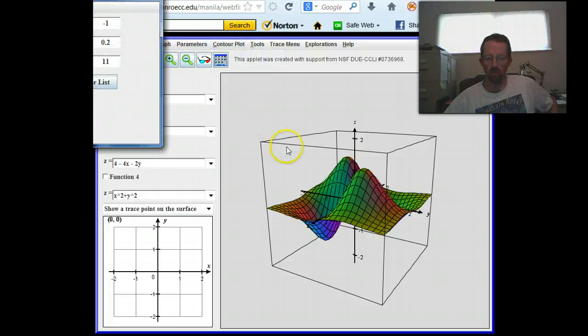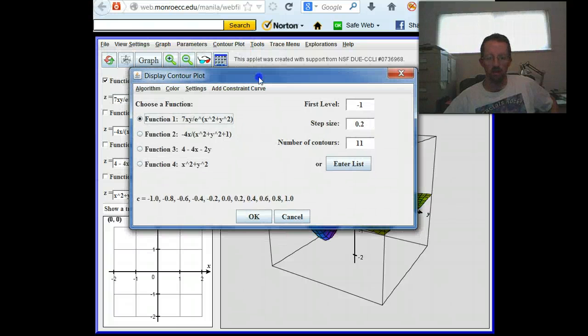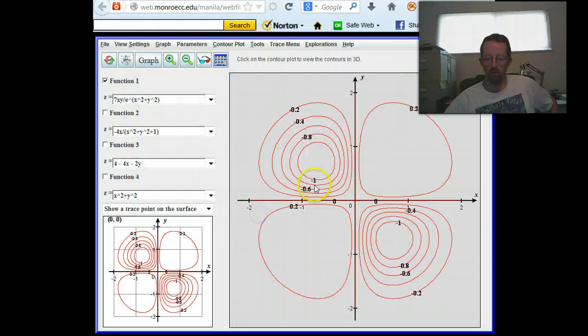There's Contour Plot, which is really, really useful. It gives this pop-up window, choose a function, choose various levels and stuff like that. So it gives the list. You could enter an explicit list or just a first level step size and number. Let's just go with the default.